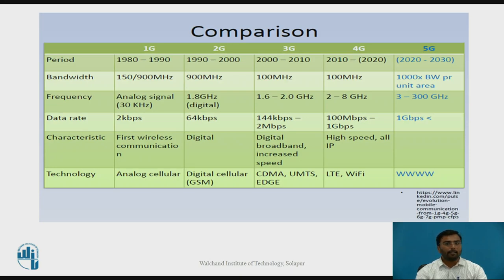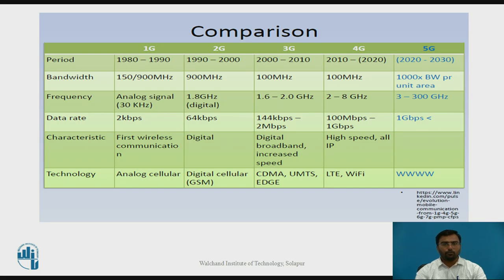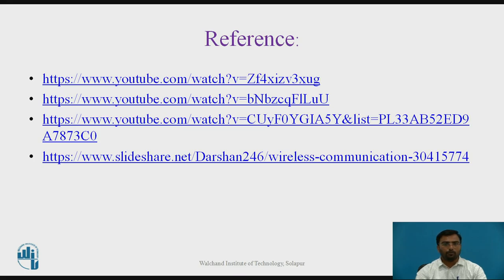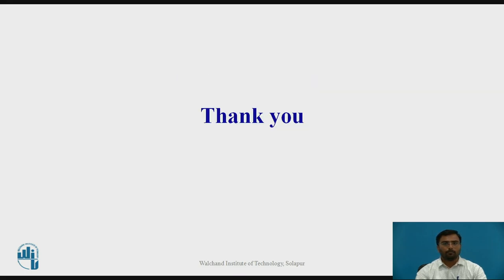This is a comparison table covering the different generations: 1G, 2G, 3G, and 4G. The 5G generation is expected between 2020 and 2030 with different parameters in the future. These four generations — 1G through 4G — cover up to today's generation, from 2010 to 2020. Thank you.